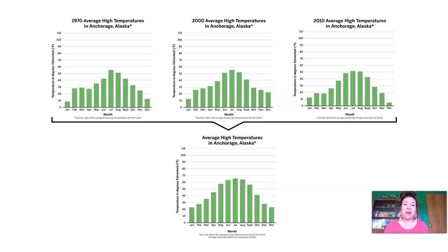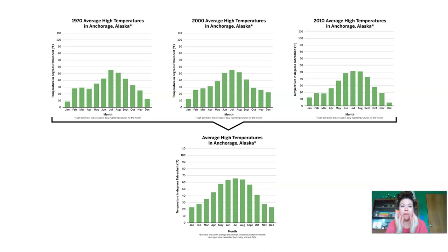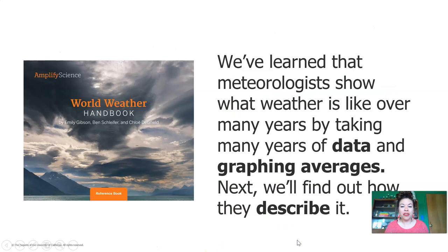Do you remember in Part 1, we were talking about how meteorologists take lots of years of weather data and they find averages? Averages are numbers that are in the middle, that are easy for us to understand, so that we can take a lot of data and boil it down to just one number so that we can easily compare it and understand it. We've learned that meteorologists show what weather is like over many years by taking many years of data and graphing averages. Next, we'll find out how they describe it.